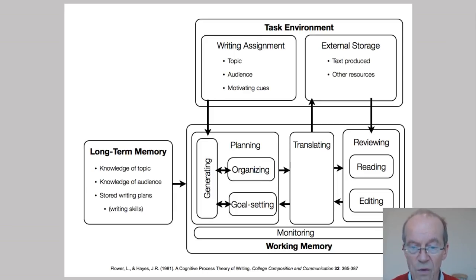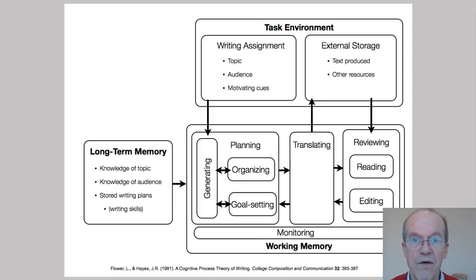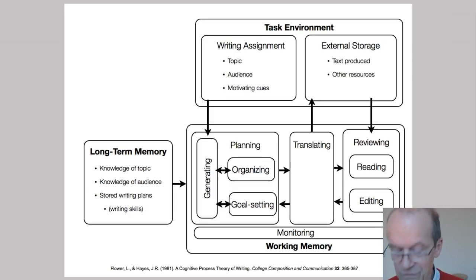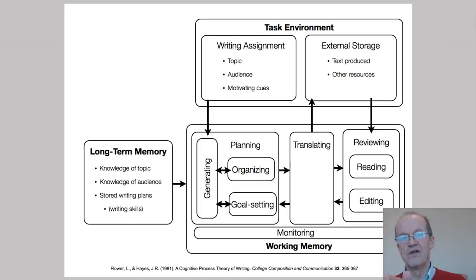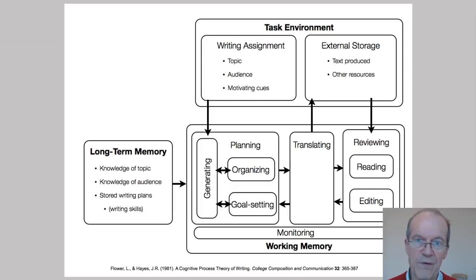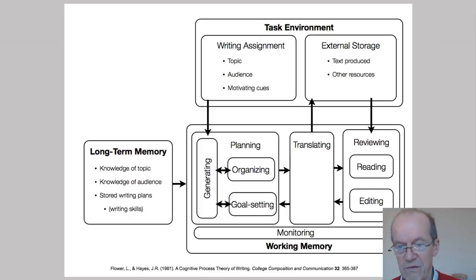Once you have these ideas more or less organized — in an outline, a concept map, or whatever medium you use — you have to translate them into a sequential paper, following from first to last. The translation from a concept map-like structure to the linear structure of a paper is a very hard task. After that, you start to review, edit, and revise your paper, which is also a very important step in which you use external storage and other available resources.